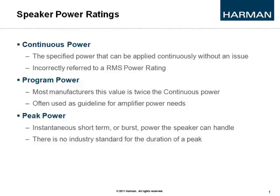Program power is what typically happens when you play music through a speaker. It's not a test signal — it's actual music with peaks, valleys, and different dynamic ranges, so you can use this as a guideline for amplifier power needs. Then there's peak power, which is an instantaneous spike. The big question with peak power is how long that spike is — five seconds or five milliseconds? There is no industry standard, but it's a value you'll see quite often.